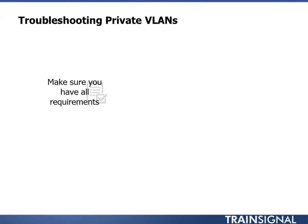Troubleshooting private VLANs is fairly simple. First, make sure you have all the requirements — things like Enterprise Plus licensing, which is required. You can't even try to configure it without a distributed switch, and you have to have Enterprise Plus for a distributed switch.